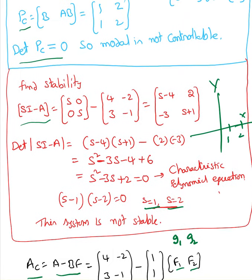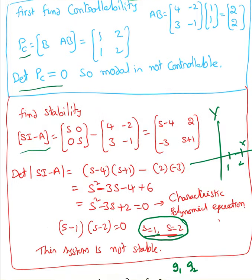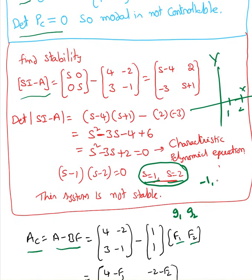First thing, I found the model is not controllable and I also find the poles in the given system. If the desired poles are not one of these actual poles, so the actual poles are 1 and 2 and my desired poles are minus 1 and minus 2.